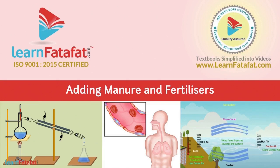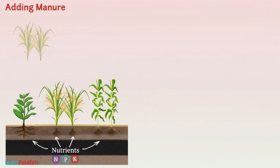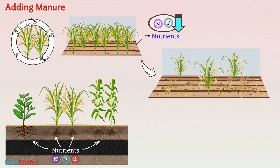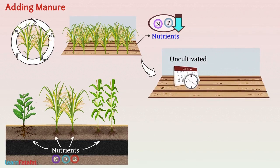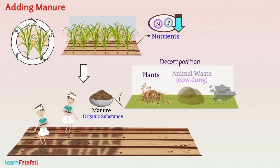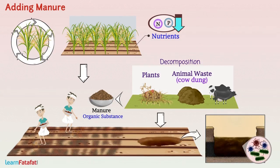Adding Manure and Fertilizers. Plants need nutrients for their growth, which are obtained from the soil. If the same crop is grown on the same land repeatedly, it reduces certain nutrients from the soil, causing crop production to decrease. The land can be left uncultivated to replenish nutrients, or manure can be added. Manure is an organic substance obtained from decomposition of plant or animal waste kept in pits at open places, where microorganisms decompose it to produce organic manure.